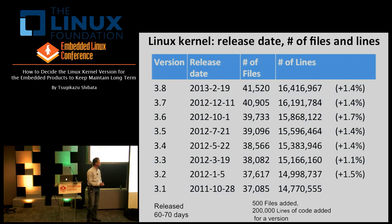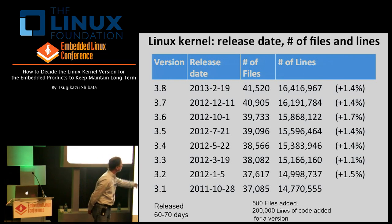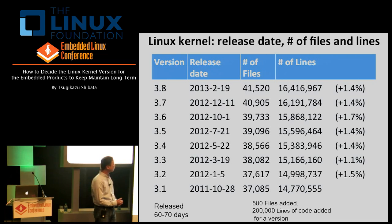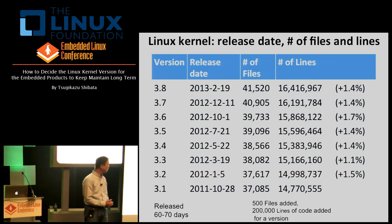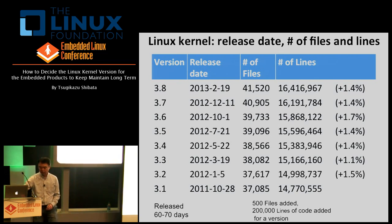Here is a list of kernel release dates and the number of files and lines. This line is the kernel version, next one is the release date. The number of files in 3.8 becomes 41,000 files, and the number of lines becomes 16.4 million lines of code. Each release is increasing about 1.4% of source code, that's mostly 200 kilolines of code, and about 500 files.